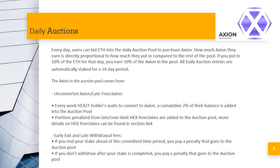The daily auction — putting tokens and value into your pocket. To get Axion, it needs to be claimed by HEX2T holders. The longer they wait to claim, the more penalties they face — about 2% of their total per week. This 2% is added into a daily auction pool where people can bid using ETH on the Axion tokens within it. If you bid 10% of the ETH on that day, you get 10% of the pool rewards.